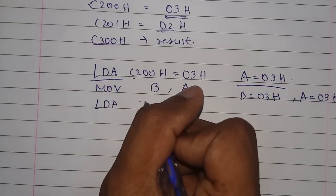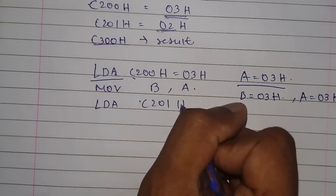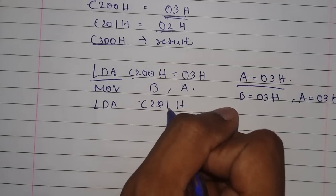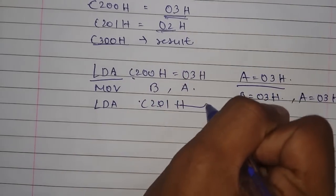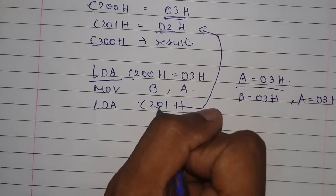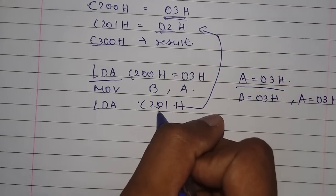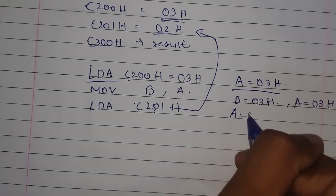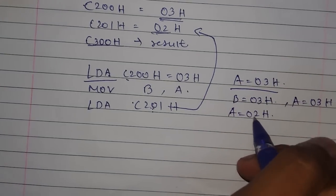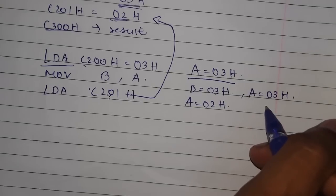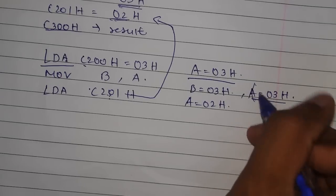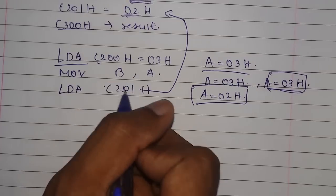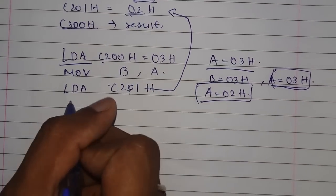Now we will again do C201H LDA C201H. We had 02 in here, as you can see we have 02. Now this 02 will be moved to the accumulator. Now the accumulator has 02H. This is important: this 03 is replaced by this new value that is 02H.